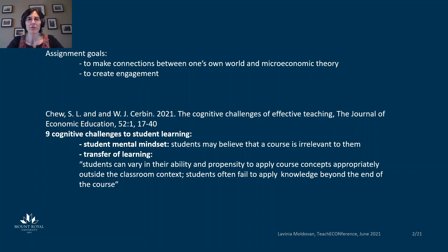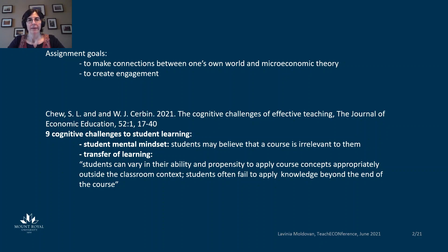The assignment asks students to make connections between their own world and microeconomic theory, and to do it explicitly, without us assuming that they would make these connections on their own, and also to facilitate engagement. Chu and Serbin identify nine cognitive challenges to student learning. One of them is the student mental mindset — that students may believe the course is irrelevant to them — and another is the transfer of learning from short-term memory to long-term memory. Chu and Serbin also note that students can vary in their ability and propensity to apply course concepts appropriately outside the classroom context.